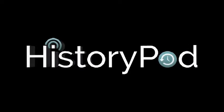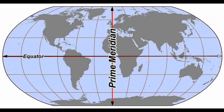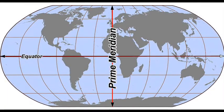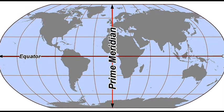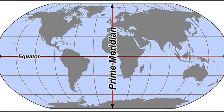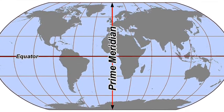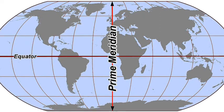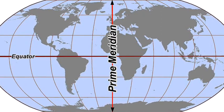Hello and welcome to HistoryPod. On 22 October 1884, the International Meridian Conference in Washington DC adopted the Greenwich Meridian for zero degrees longitude.